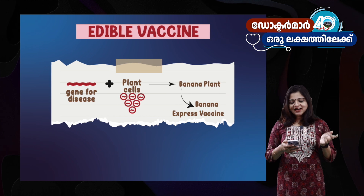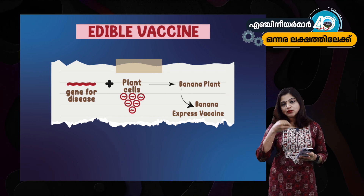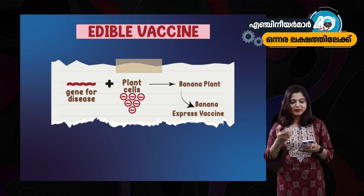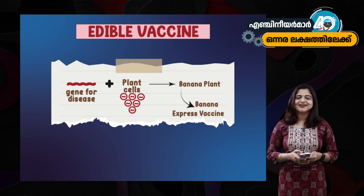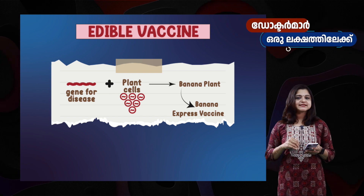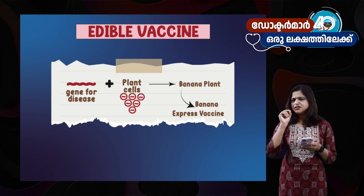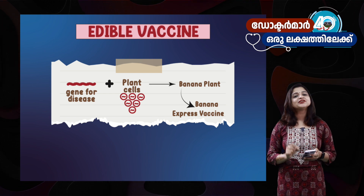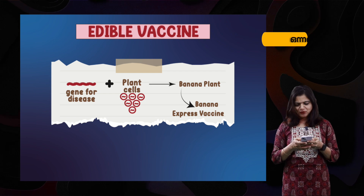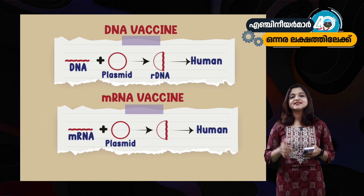We have seen an edible vaccine — a banana in an exam. If we have seen a banana, we have seen a vaccine. If we have seen a particular gene, we have seen a very short test. The next one is DNA vaccine and mRNA vaccine. What is DNA and mRNA vaccine?